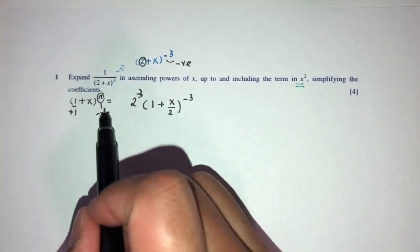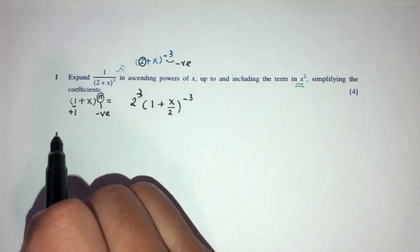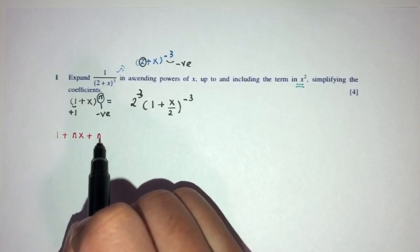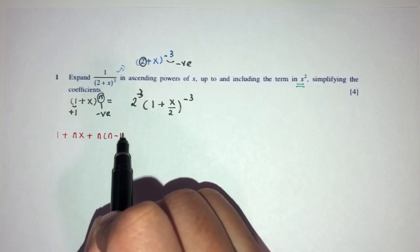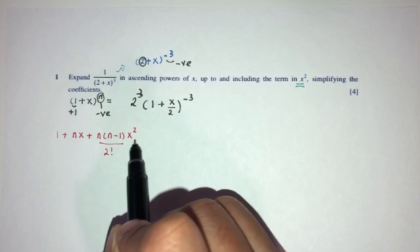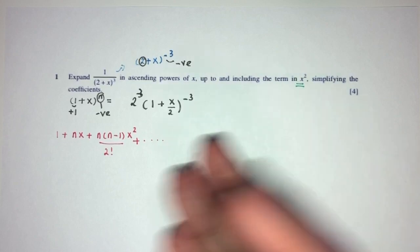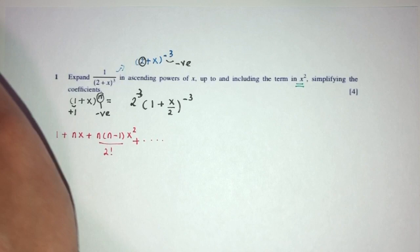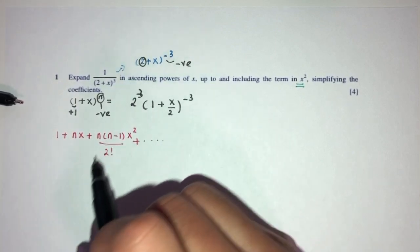Now, we have to know the expansion of the formula usually is 1 plus nx plus n times n minus 1 x squared over 2 factorial. Of course, it keeps going on, but we don't need to go more than x squared because it only asks for this.